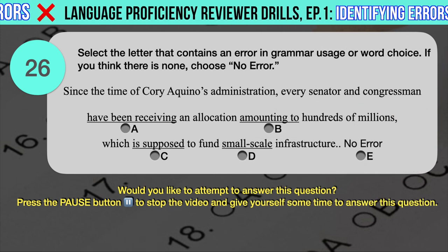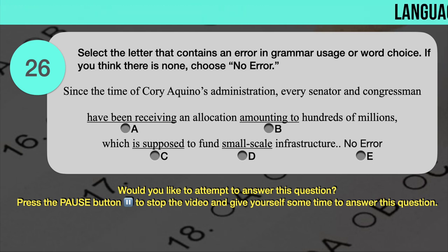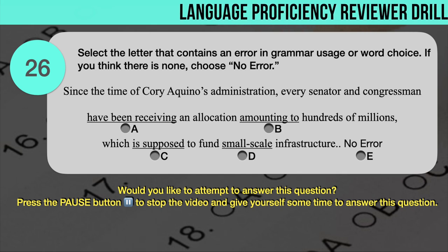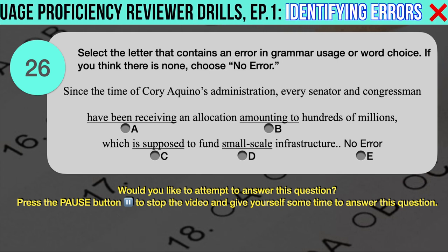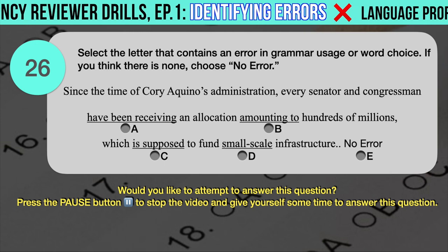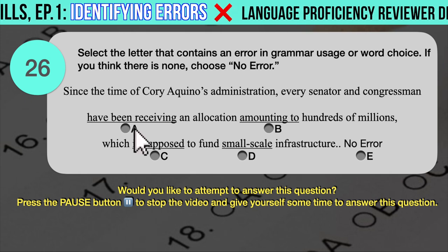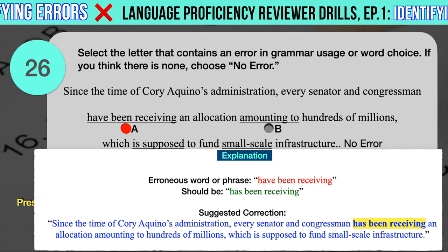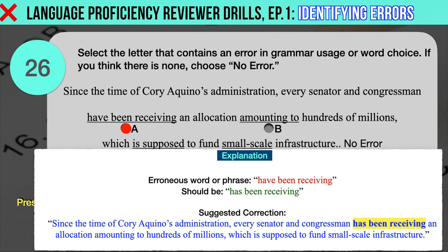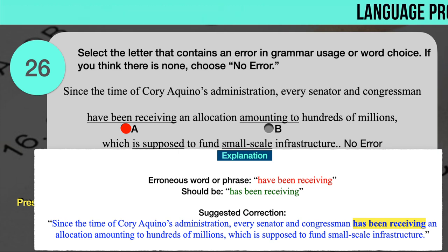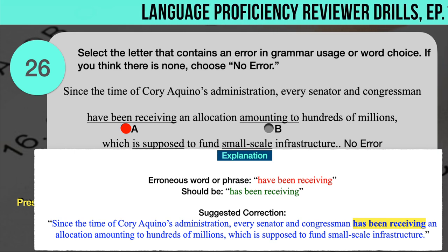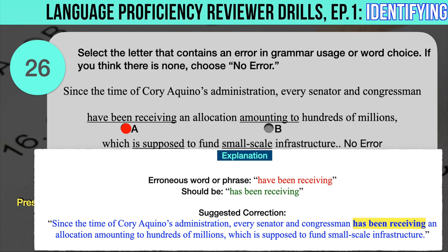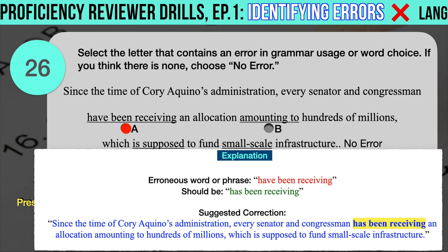Drill question number 26. 'Since the time of Cory Aquino's administration, every senator and congressman have been receiving an allocation amounting to hundreds of millions, which is supposed to fund small-scale infrastructure.' The underlined words are: A. Have been receiving, B. Amounting to, C. Is supposed, D. Small-scale. The correct answer is A. 'Have been receiving' should have been 'has been receiving.' The subject 'every senator and congressman' is considered singular because of the singular adjective 'every,' so the plural verb 'have' should be changed to its singular form 'has.' Correct sentence: Every senator and congressman has been receiving an allocation amounting to hundreds of millions, which is supposed to fund small-scale infrastructure.